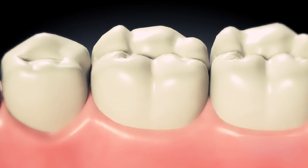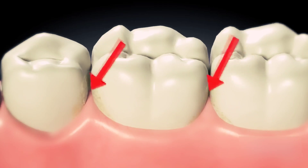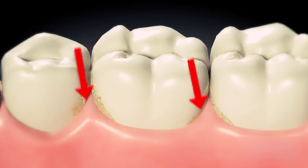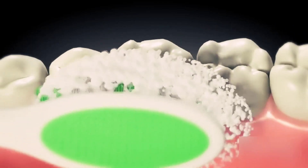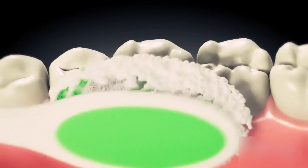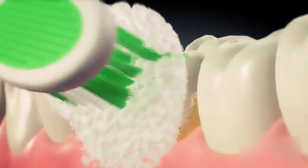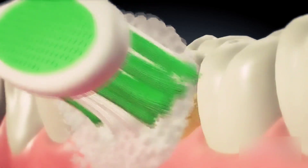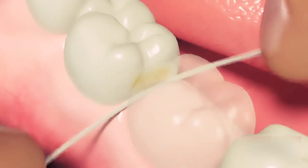Bacteria plaque can also be found along your gums, the sides of your teeth, and between your teeth. This is why it is so important that you brush all surfaces of your teeth by angling the bristles of the brush to get below the gums and in between the teeth.